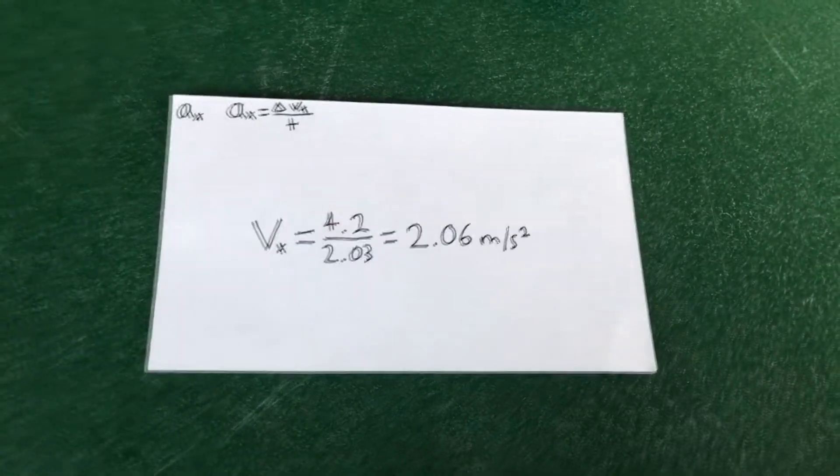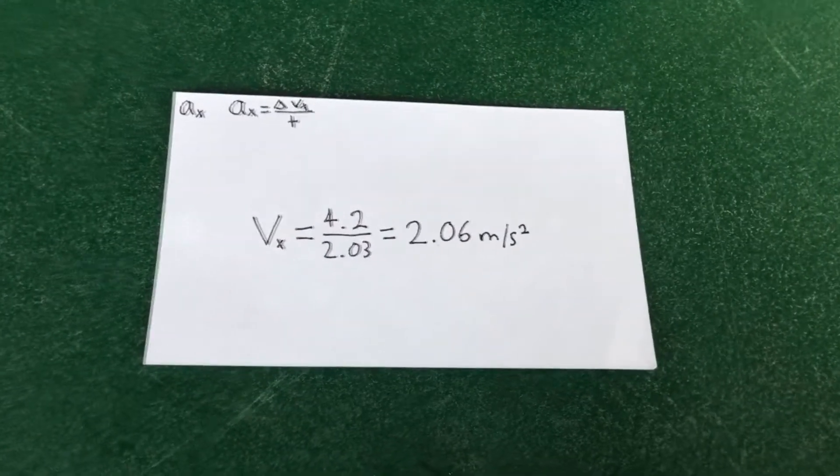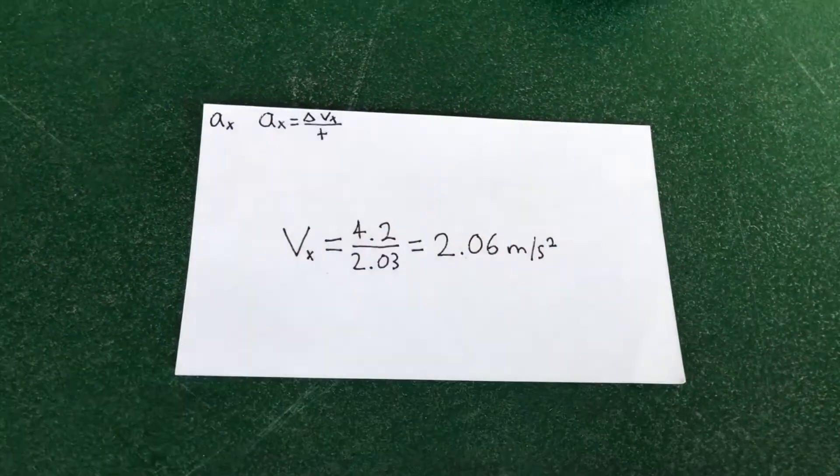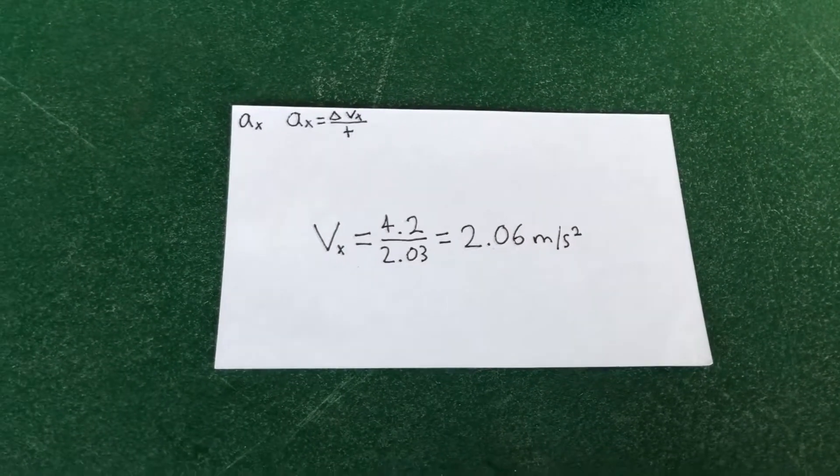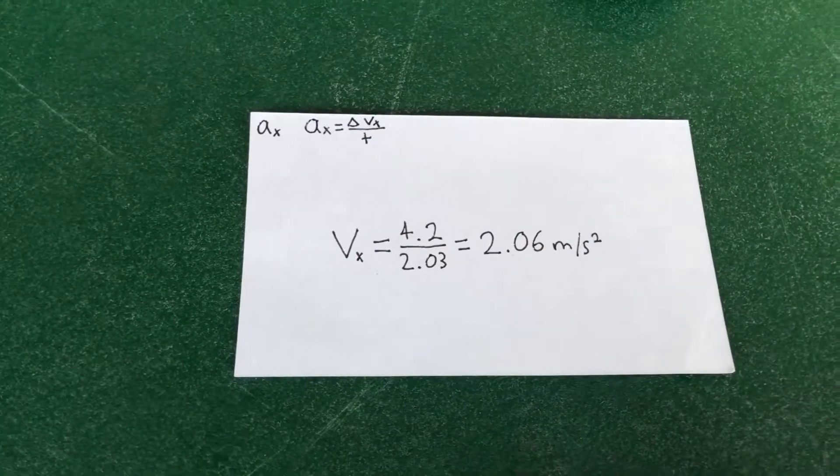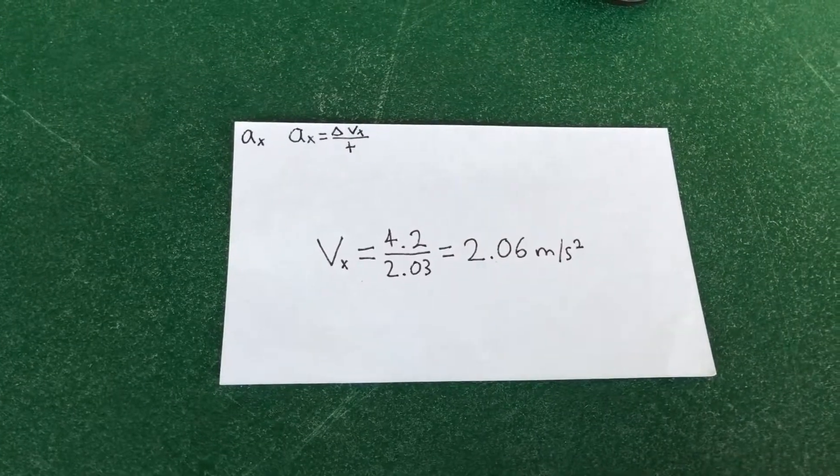Acceleration: we calculated change in velocity over time, which was 4.2 meters per second divided by 2.03 seconds. Our acceleration was 2.06 meters per second squared.